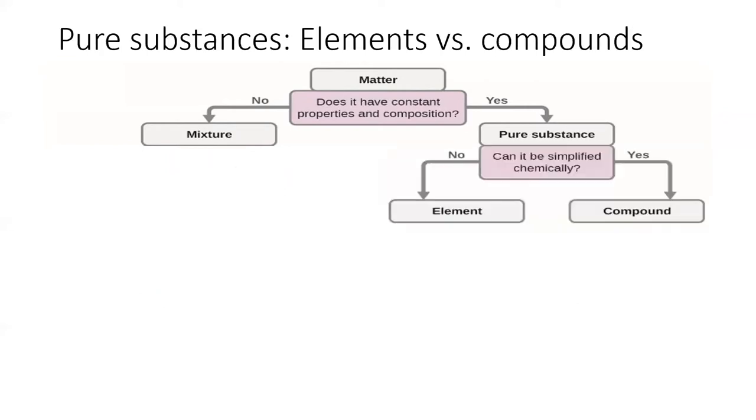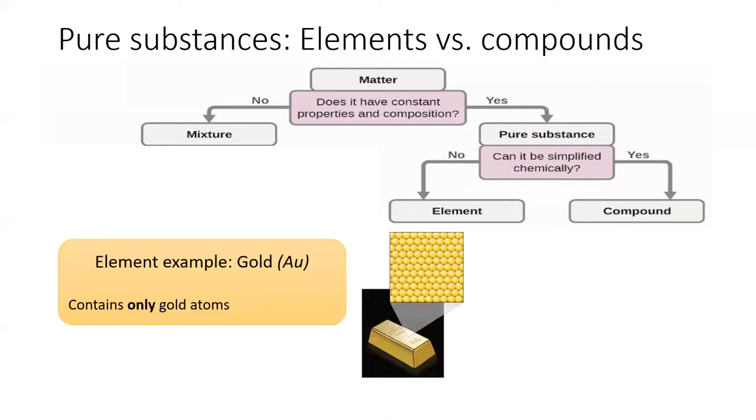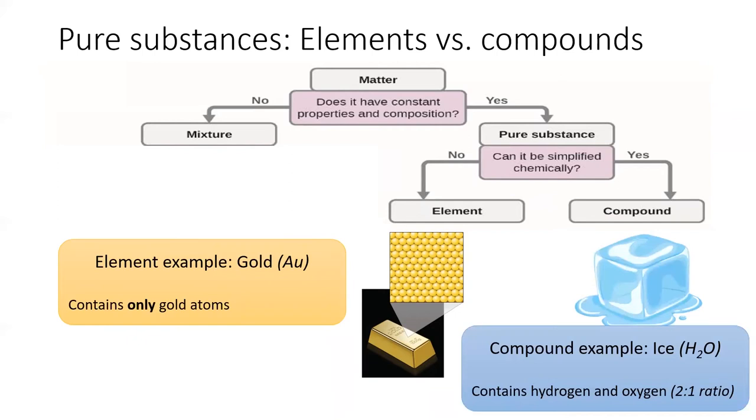Pure substances can further be divided into elements and compounds by asking the question, can it be simplified chemically? Elements cannot be simplified any further. For example, a gold bar is a pure element. It contains only atoms of gold within. A pure element will contain only atoms of that element and nothing else. On the other hand, an ice cube has atoms of hydrogen and oxygen, and they are bonded in a constant two-to-one ratio. An ice cube is therefore a pure compound.